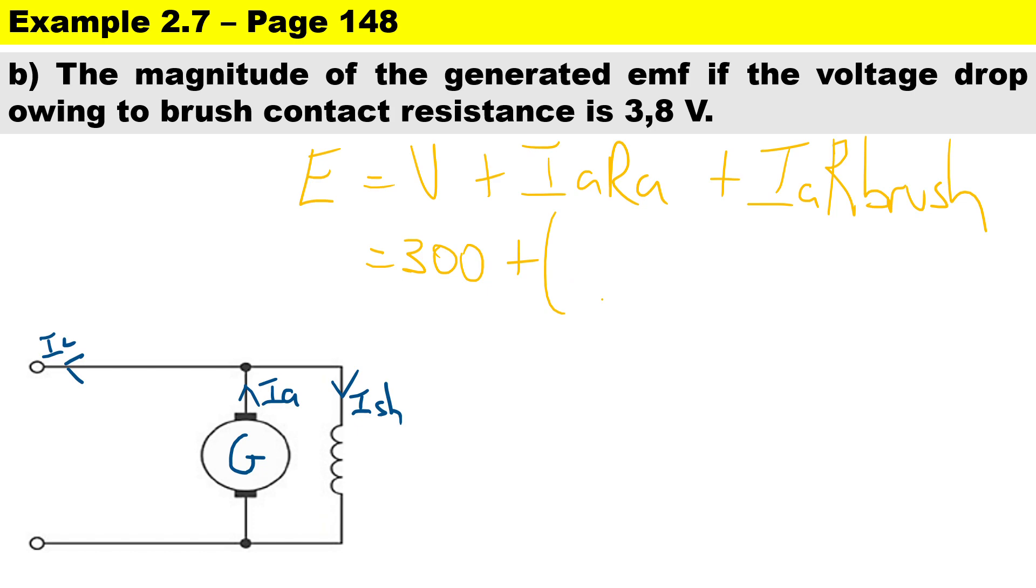You'll notice the generator is always positive. The terminal voltage is 300 volts, the armature current we've worked that out, it is 52.5 times the armature resistance which is the smaller one, that's 0.2, and then the volt drop across the brushes is 3.8 volts.